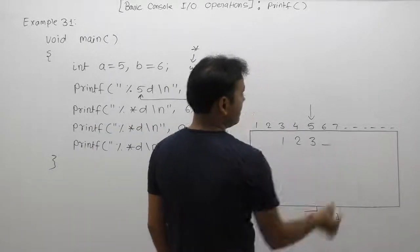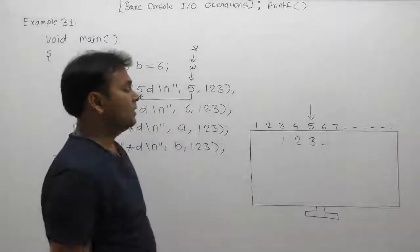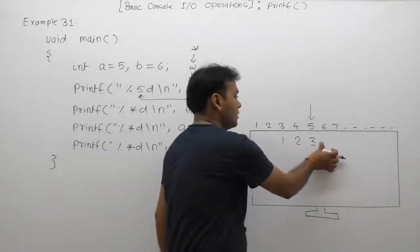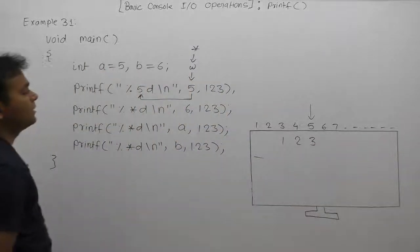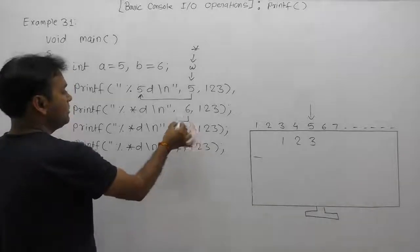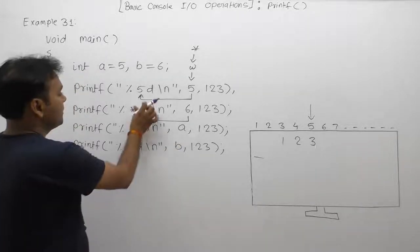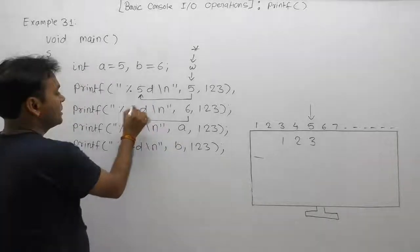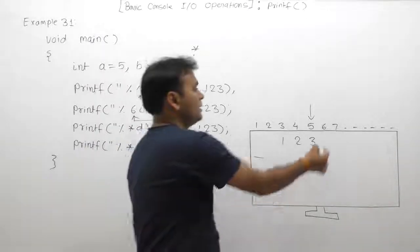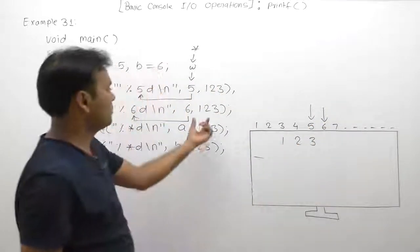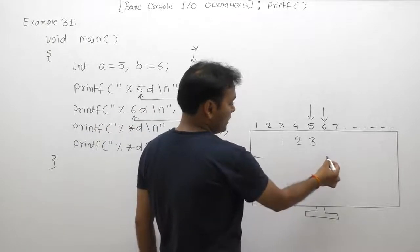After that, the cursor will be on the 6th position, then according to \n the cursor moves to the beginning of the next line. Again, the asterisk is replaced by the first argument value 6, so it becomes %6d. According to %6d, the total width is 6, not 5. The number 123 is displayed in a width of 6, so there are 3 spaces before the value.